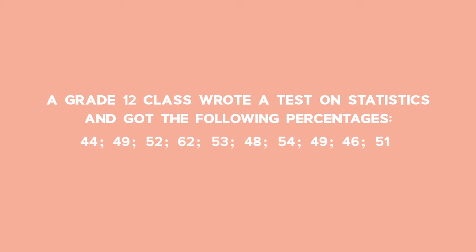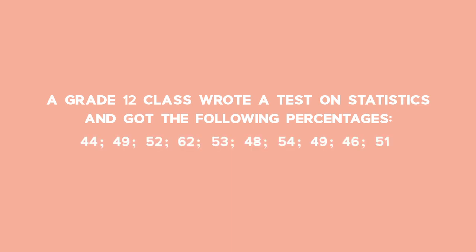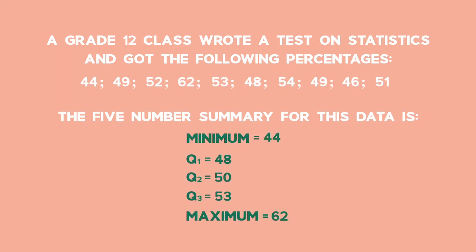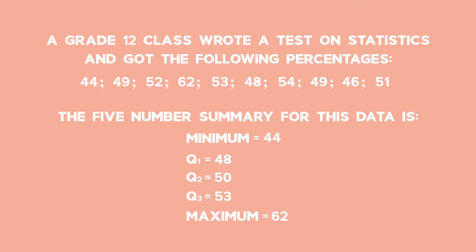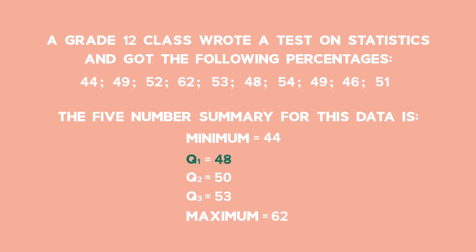Before we plot our box and whisker plot, we would have to put the numbers in numerical order and then we would be able to find our five-number summary. But luckily the five-number summary has been done for us already. We've got our minimum value of 44, our maximum value of 62, and then our three quartiles: Q1, Q2 and Q3.